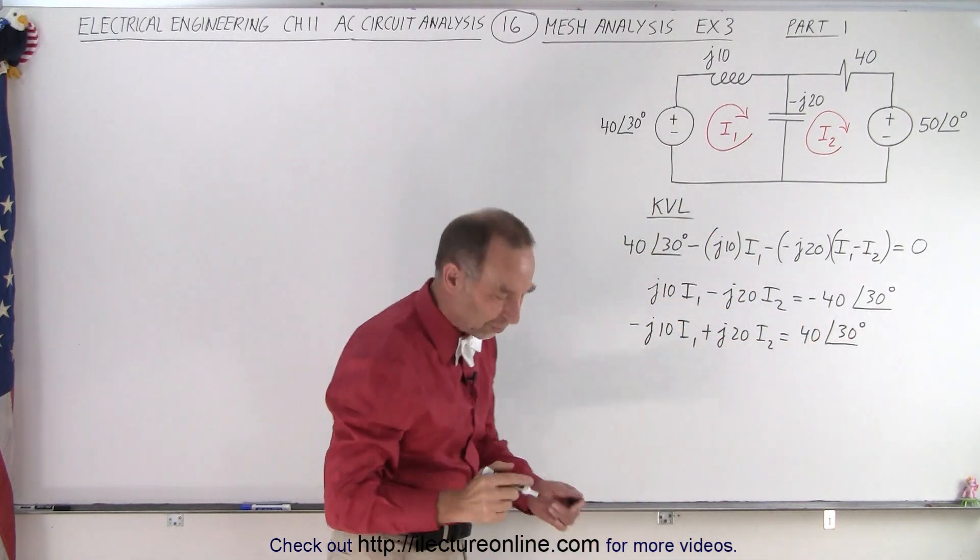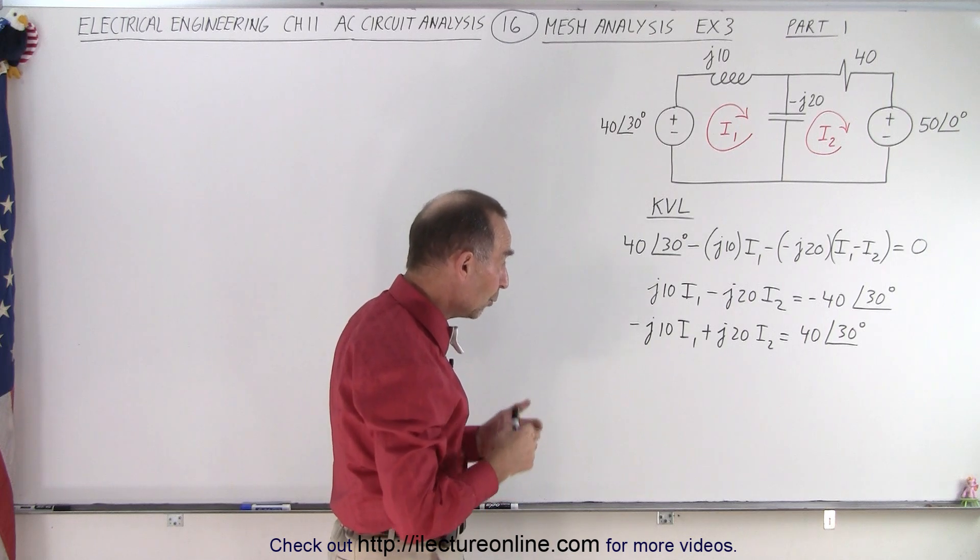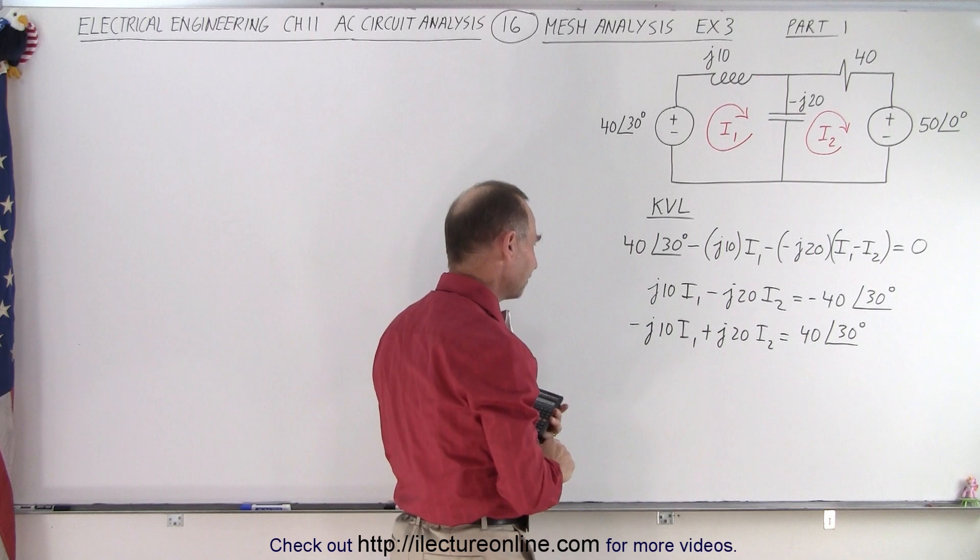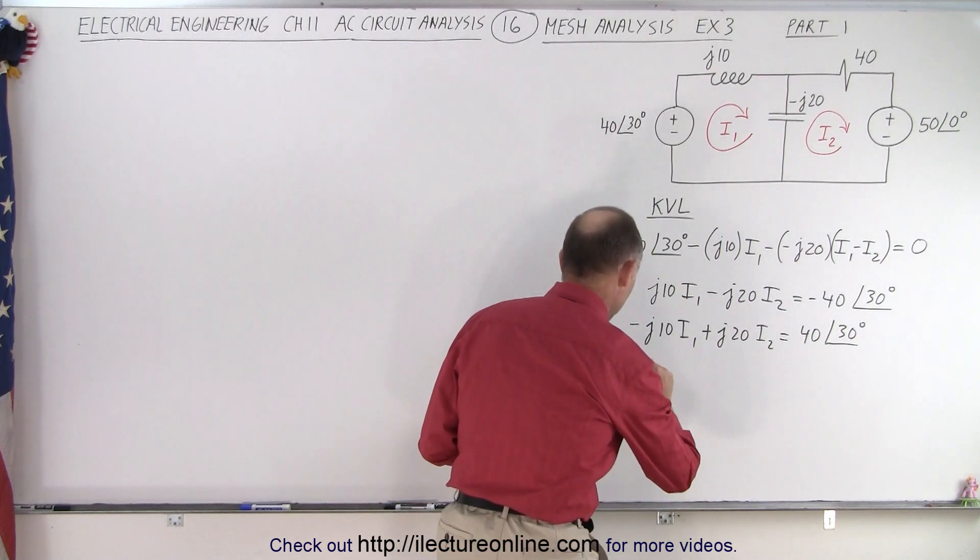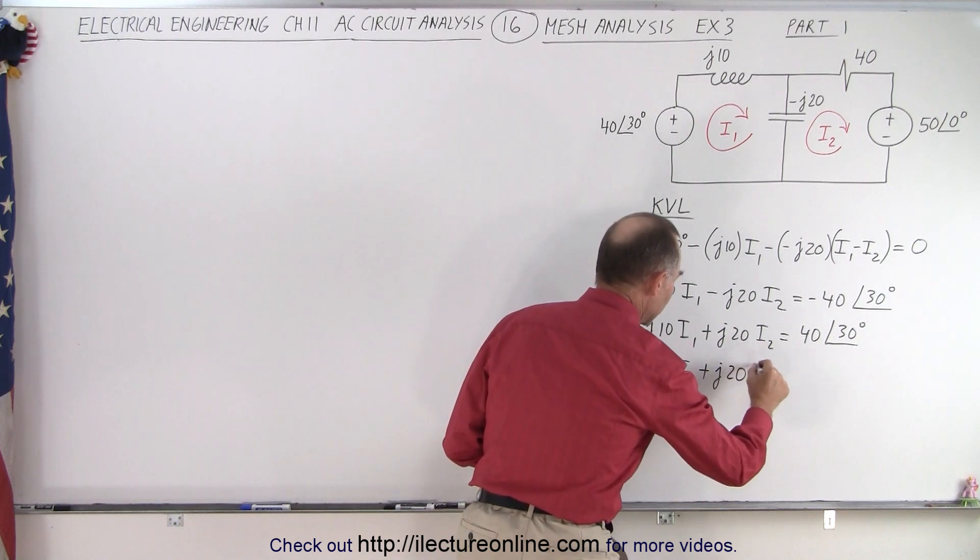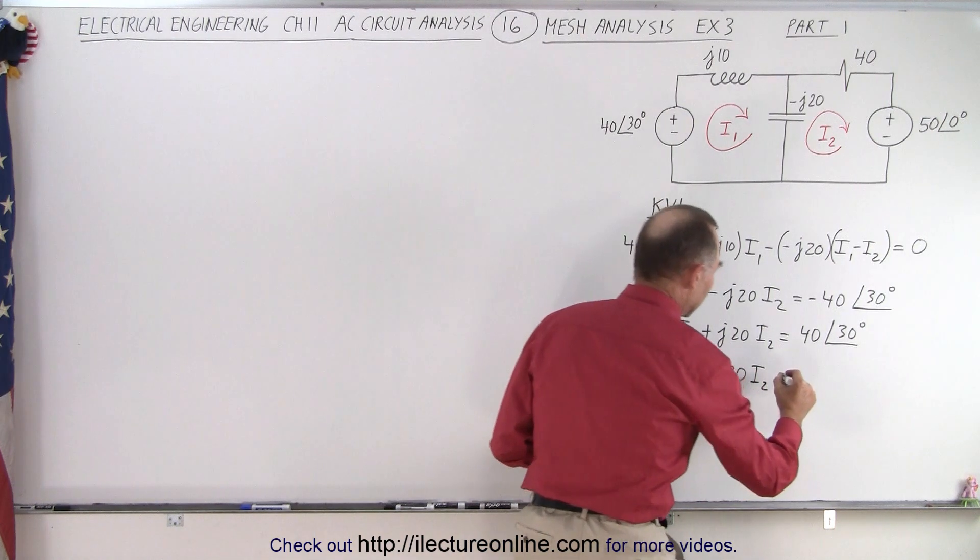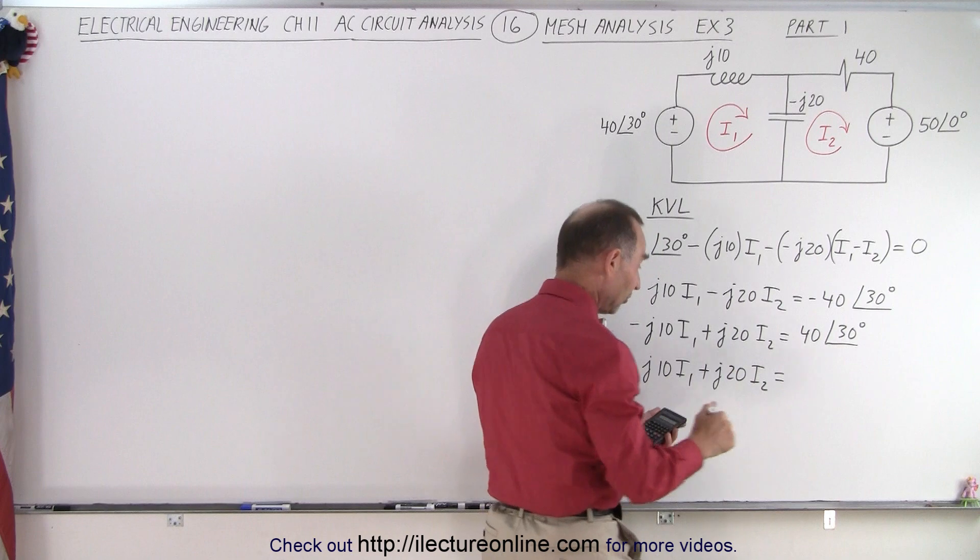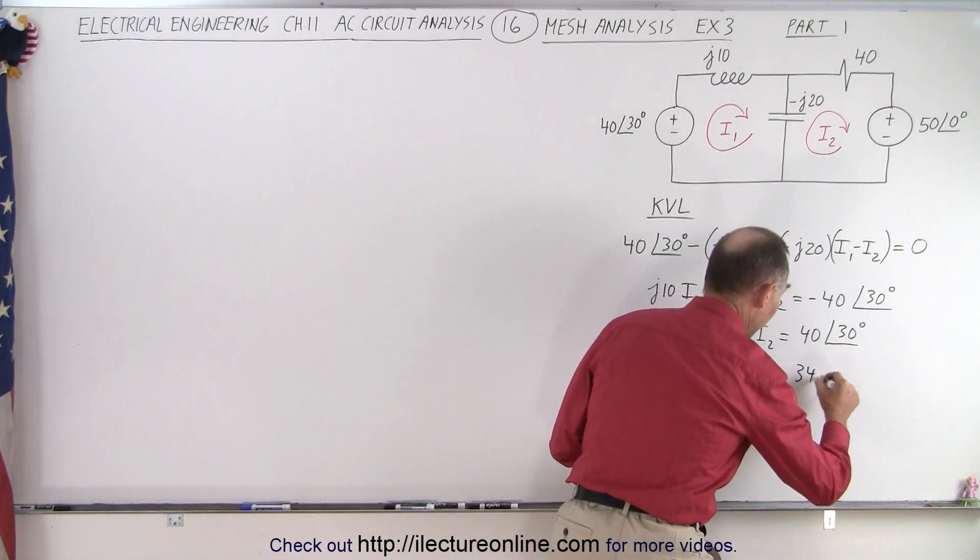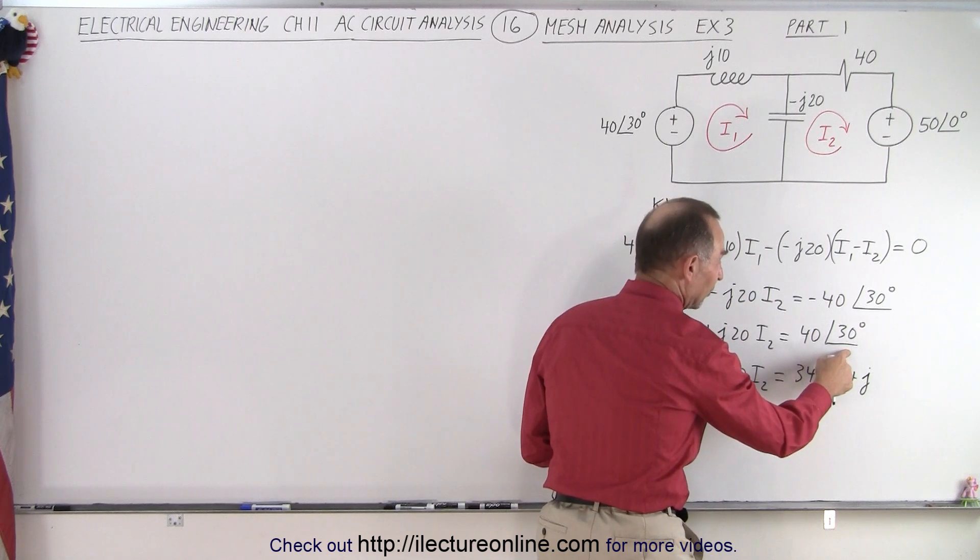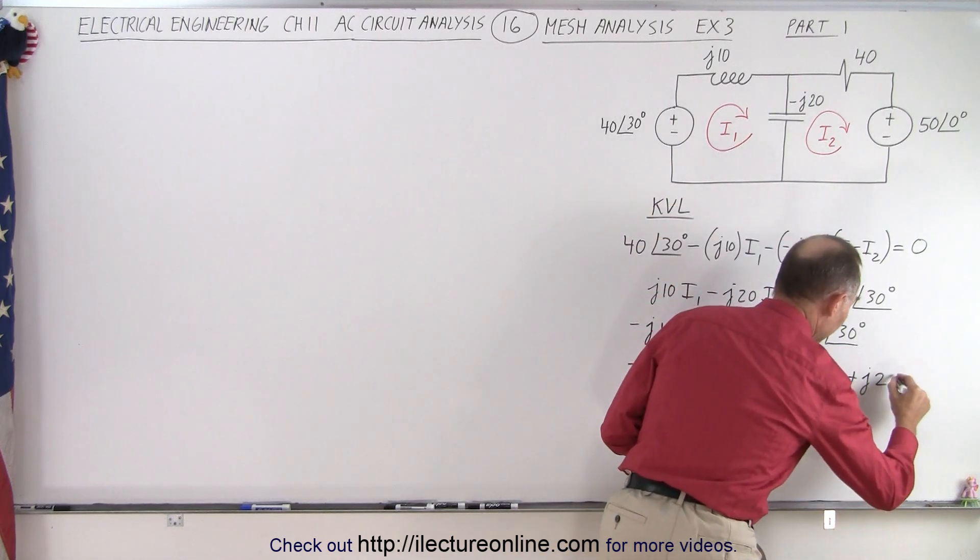So now let's write it as to the real and imaginary part. So we need a calculator for that. And so that becomes minus J10 I1 plus J20 I2 is equal to the real part will be 30. Take the cosine times 40 gives me 34.64. 34.64 plus J. The sine of 30 is 1 half times 40 gives me 20.